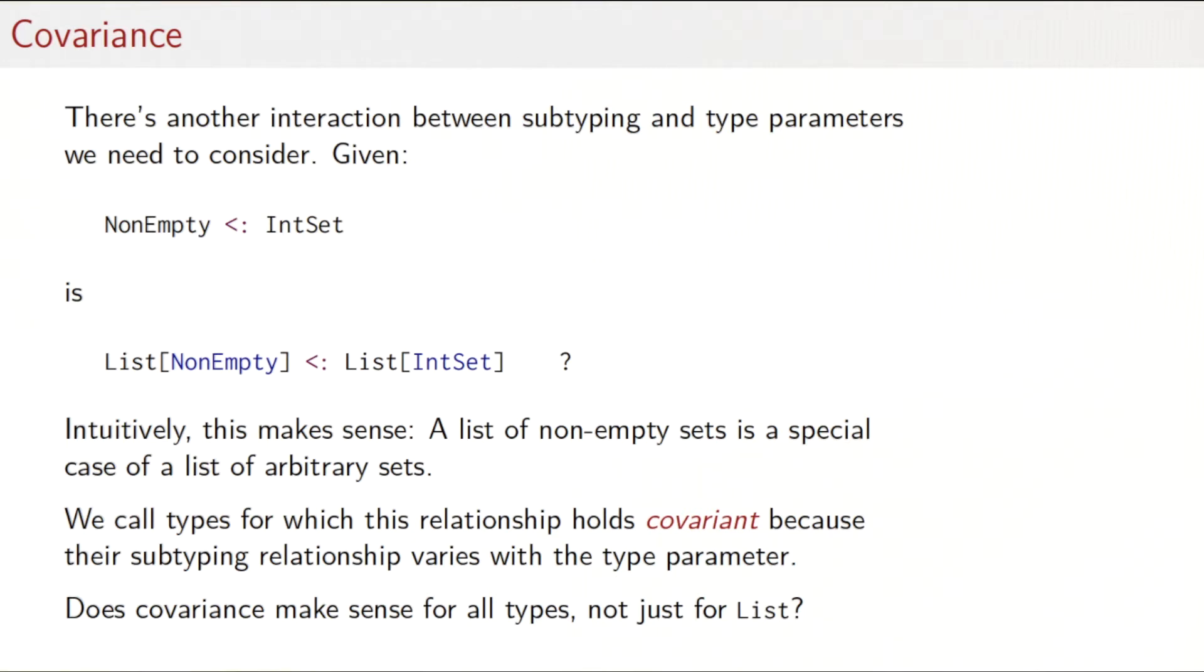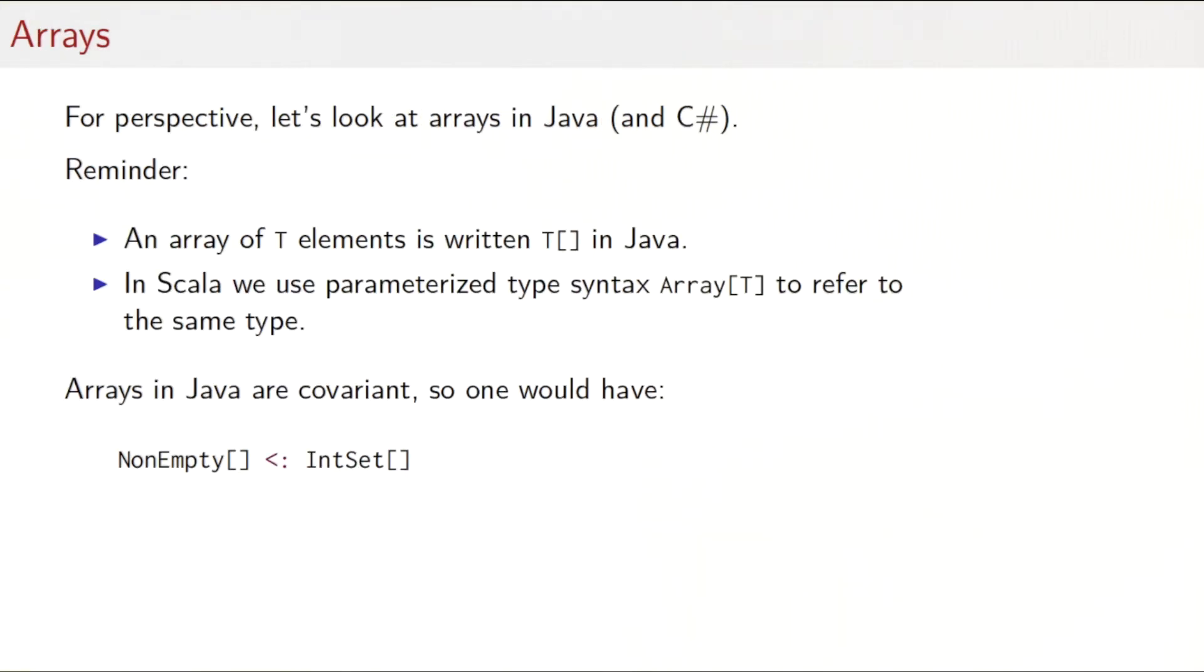In our case then, it would make sense to make list into a covariant type. The question to ask then is: is that a property just of list or should all types be covariant? Is covariant something that every parameterized type should be? So to get some perspective on it, let's look at the concept of arrays in Java and also in C-sharp, which is in this respect bug for bug compatible with Java. If you don't know Java or C-sharp, then the only thing you need to know here really is that an array of elements of type T is written T brackets in Java. And in Scala, we actually express that slightly differently. We would use a normal parameterized type syntax Array[T] to refer to the same types.